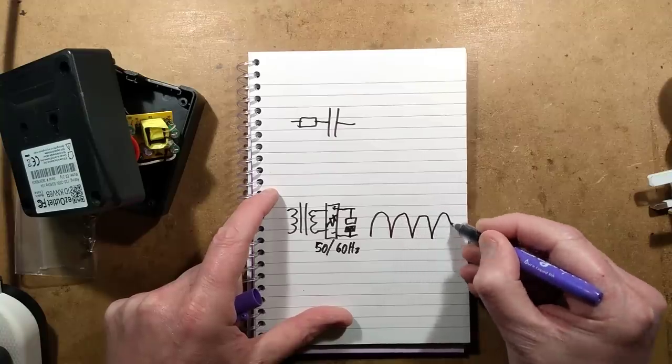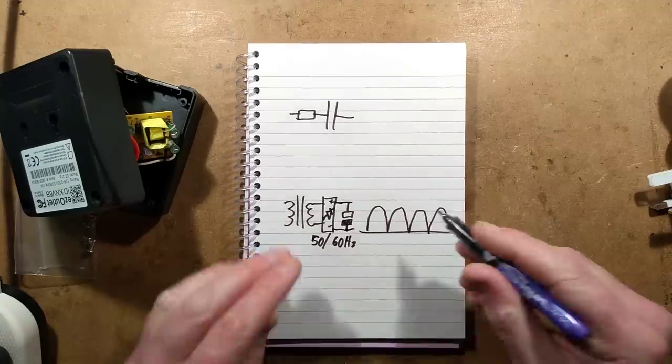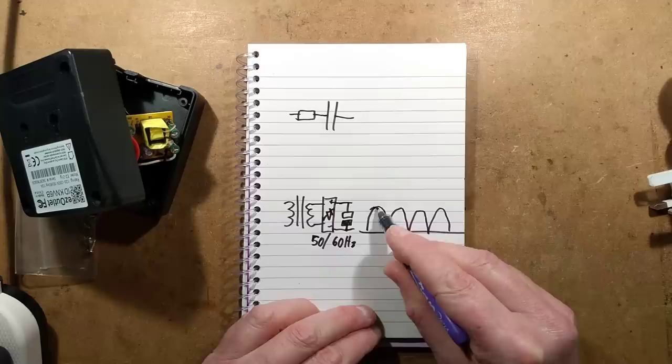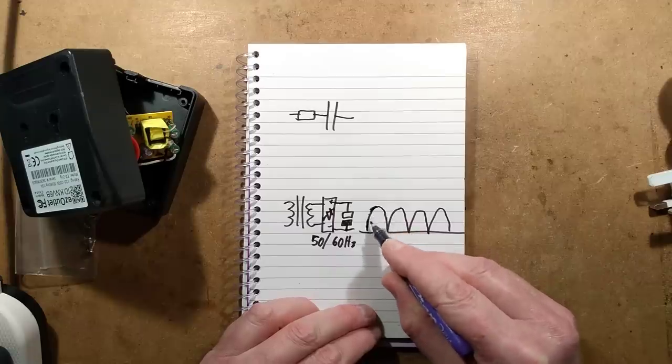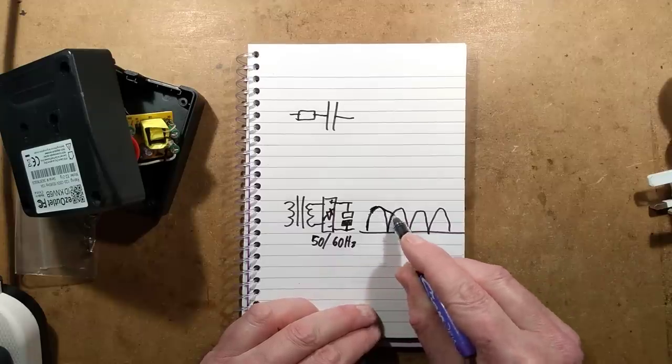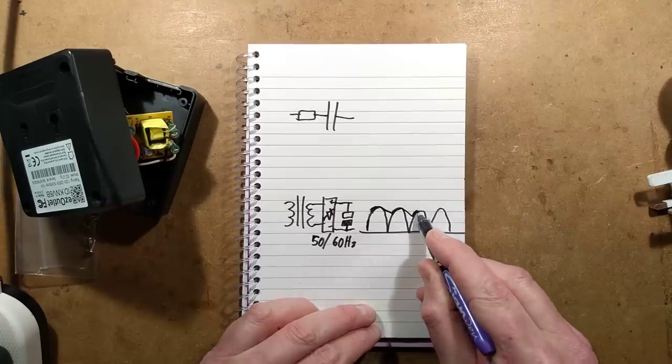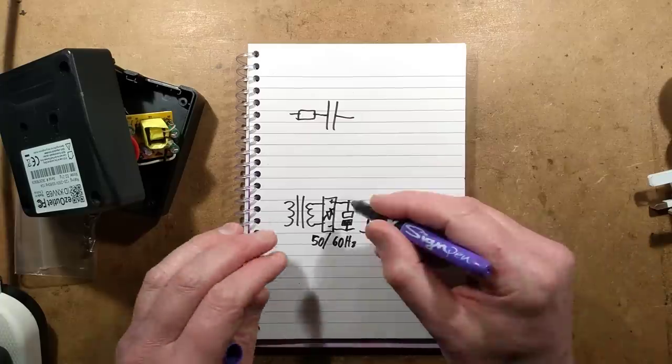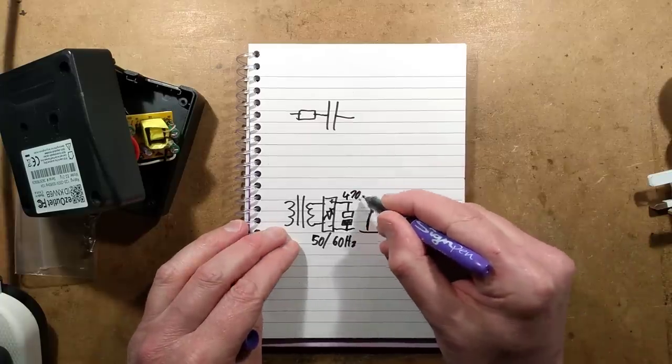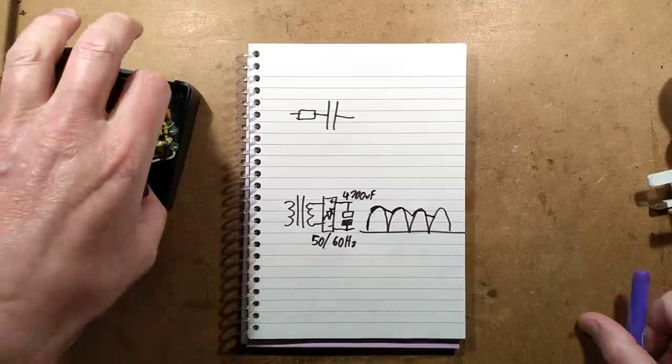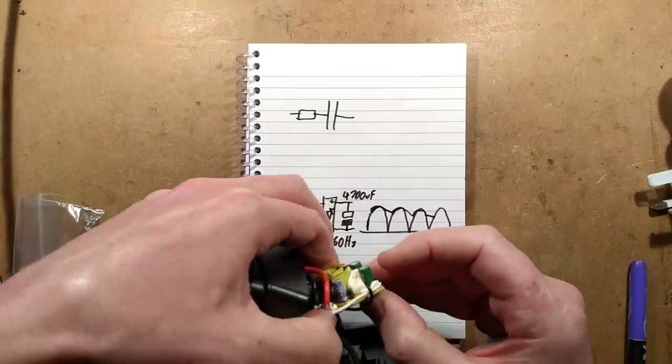The output frequency after it had been rectified would be a series of humps of either 100 or 120 humps per second. The capacitor value had to be quite big because there's quite a big gap between them and it had to ride. When these peaks would charge the capacitor up, but then it had to ride down until the next one humped up and then it rode down again. That meant the capacitor value was typically in the region of say, let's take an average value 4700 microfarad.